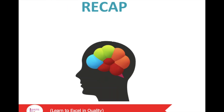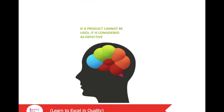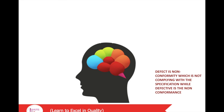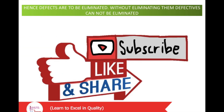Now it's recap time. A product can have multiple defects or imperfections but will not be considered defective unless the defect is very severe or prevents the product from functioning. If a product cannot be used, it is considered defective. Defect is non-conformity, not complying with specification, while defective is non-conformance. Defects can be acceptable to the customer based on severity and are sellable, but defectives are never given to the customer. Hence, defects must be eliminated — without eliminating them, defectives cannot be eliminated.